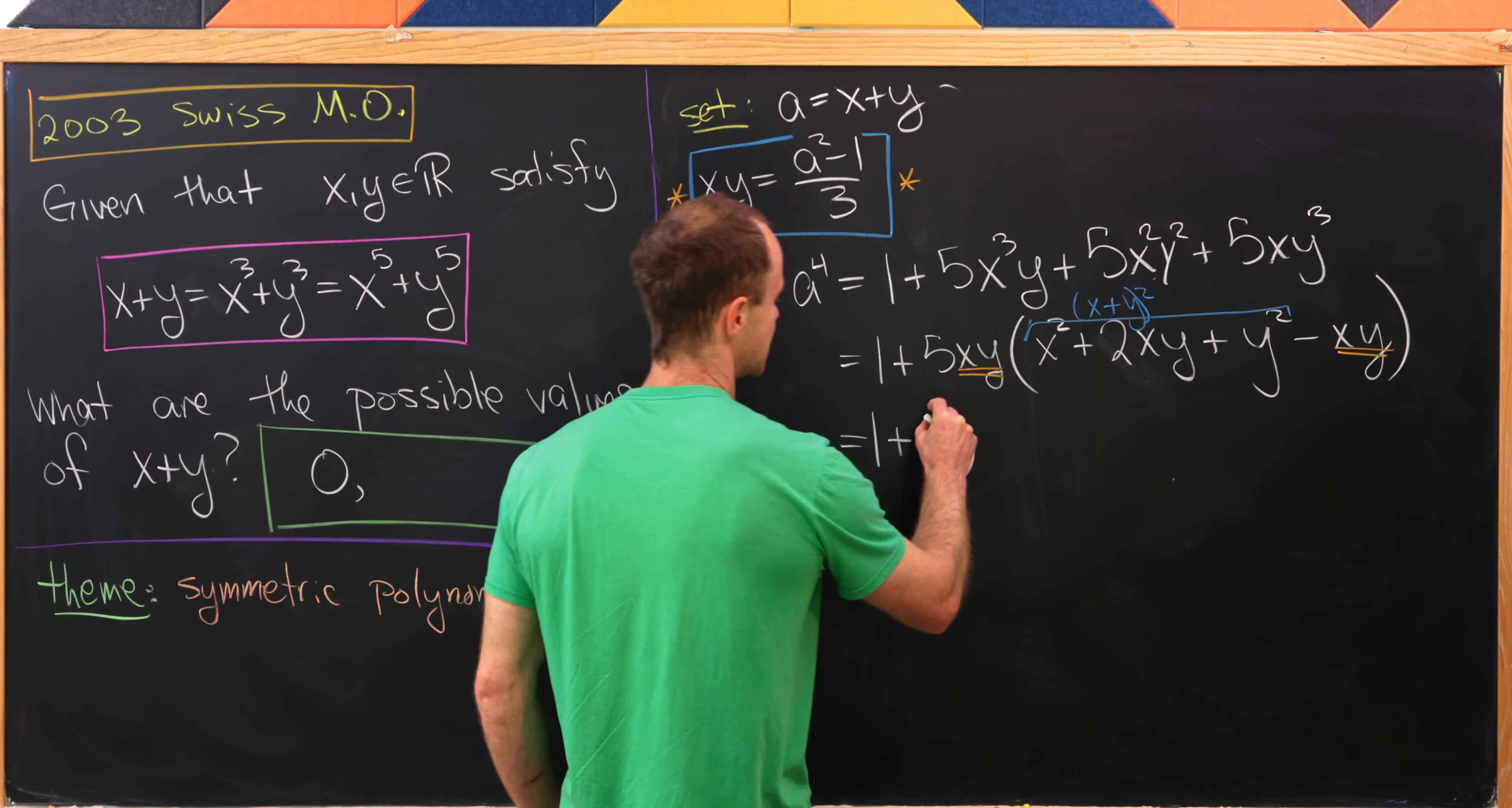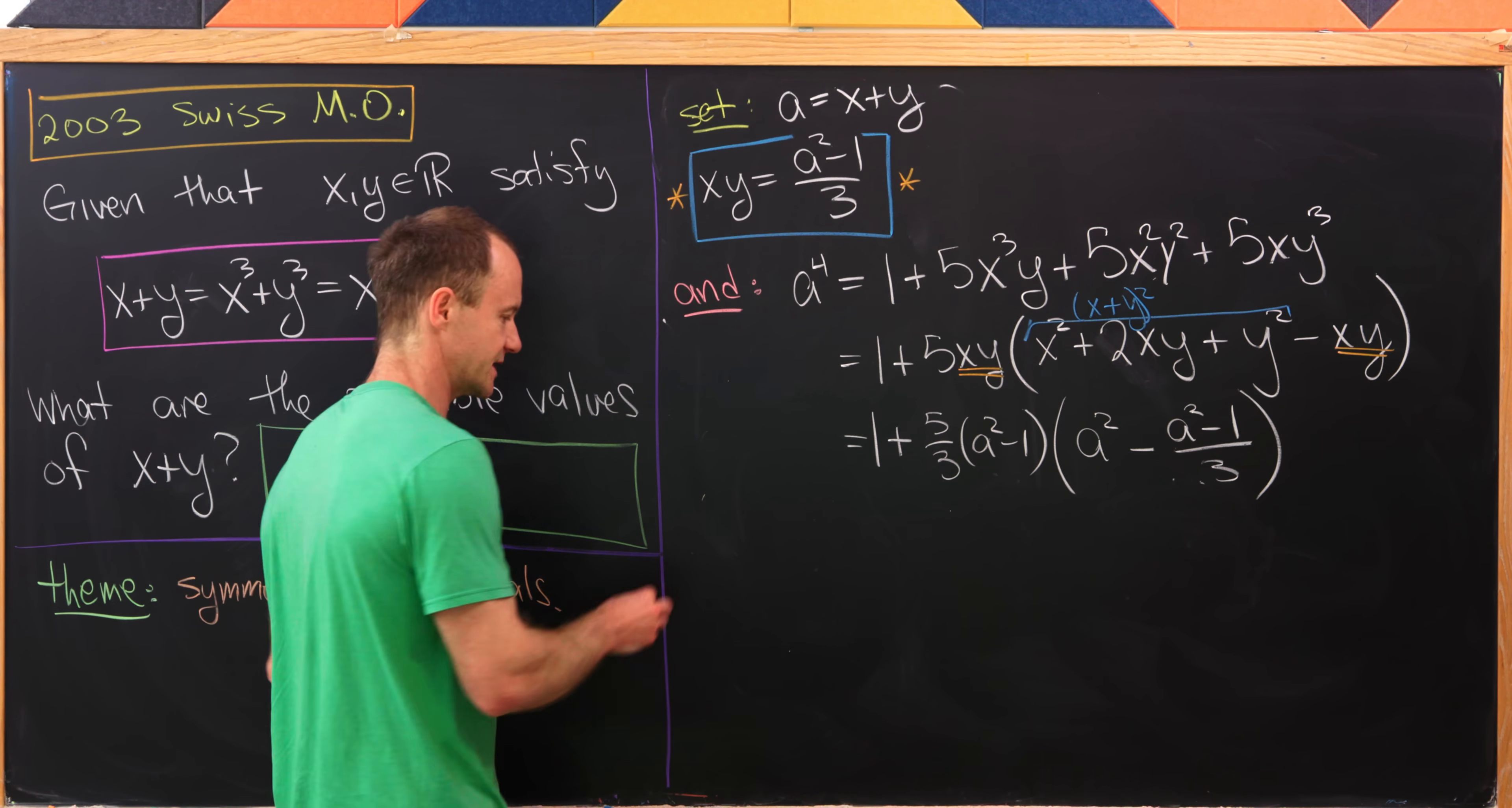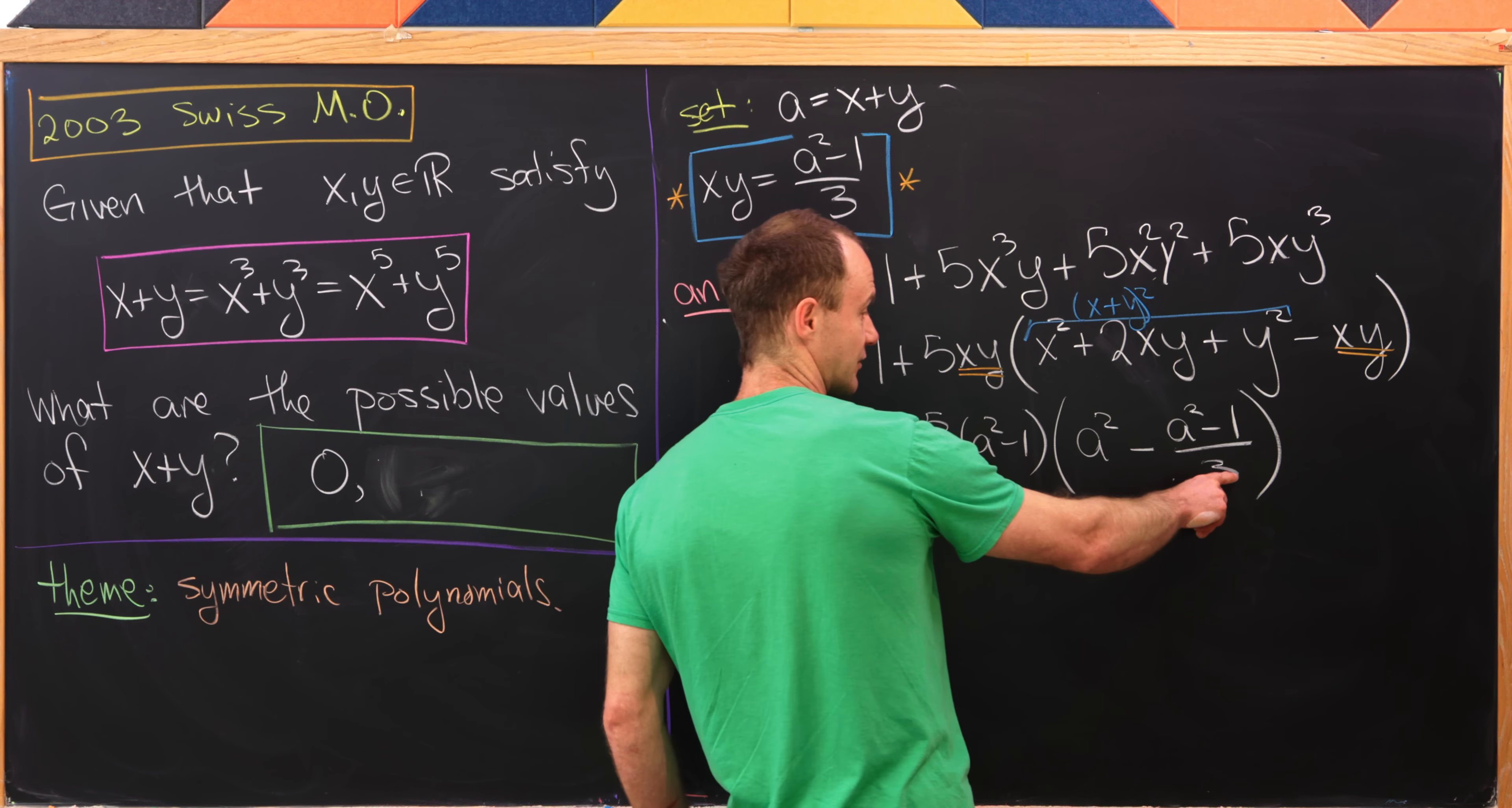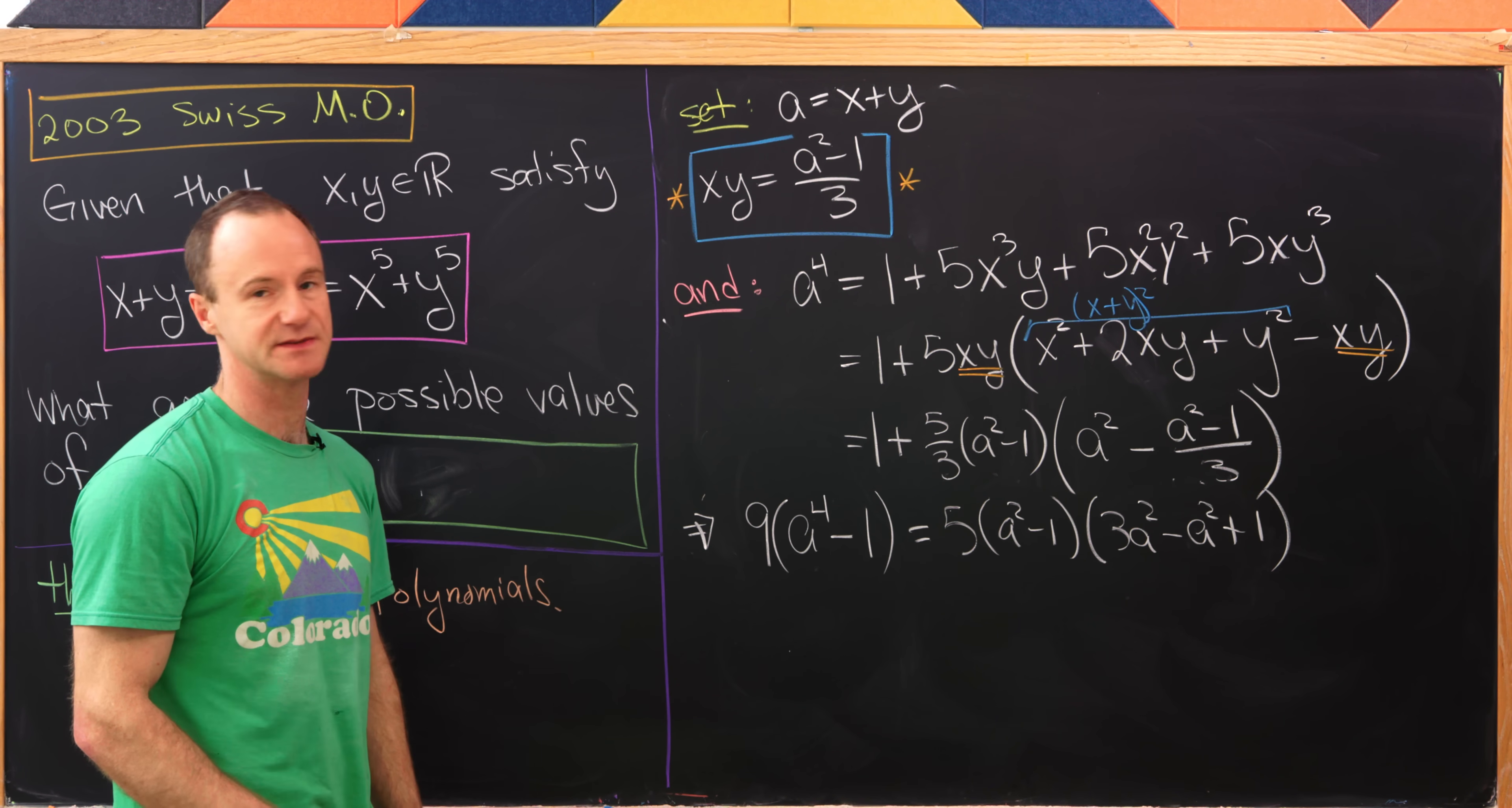So let's do that. This is going to be equal to 1 plus 5 over 3 times a squared minus 1, and then it'll be x plus y squared, so that's a squared, minus another copy of a squared minus 1 over 3. Now we're going to do a bit of manipulation. I'll start by subtracting 1 from both sides of the equation. That'll leave me with a to the fourth minus 1 on the left. And then I'll also multiply both sides of the equation by 9. That'll cancel this 3 out here and this 3 here as long as I multiply this by 3, but then I also have to multiply this by 9. So that's going to leave me with 5 times a squared minus 1 times, well, this will now be 3a squared minus a squared plus 1. So again, we move this 1 over and we multiply both sides by 9.